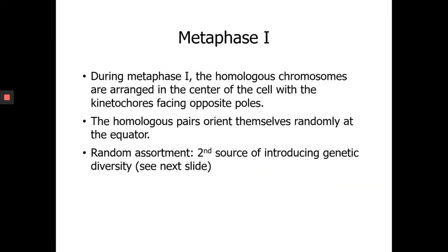This is Prometaphase. Then in Metaphase, the homologous pairs will be arranged in the center of the cell — we call that the equator or metaphase plate — and they face opposite poles because they will move away from each other. In Metaphase I, homologous chromosomes orient themselves randomly at the equator.